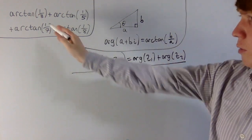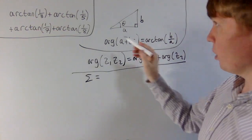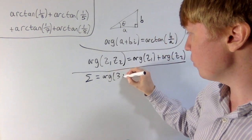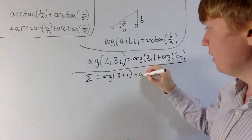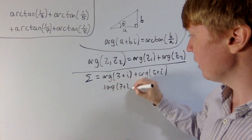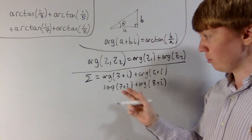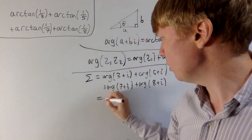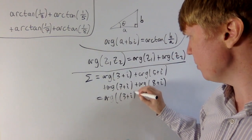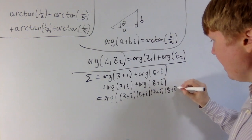We'll use this to evaluate the sum. Calling the sum sigma, arctan of one-third is the argument of three plus i, and we add the argument of five plus i, the argument of seven plus i, and the argument of eight plus i. Using the trick of turning the sum of arguments into the argument of the product, this should be roughly equal to the argument of (three plus i) times (five plus i) times (seven plus i) times (eight plus i).